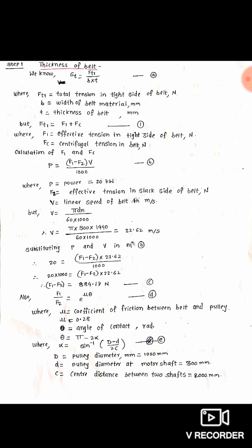For finding the linear speed we use: v = π × d × n ÷ (60 × 1000). We substitute the values of d and n for the small size pulley: v = π × 300 × 1440 ÷ (60 × 1000). After calculating this we get the answer of 22.62 meters per second.